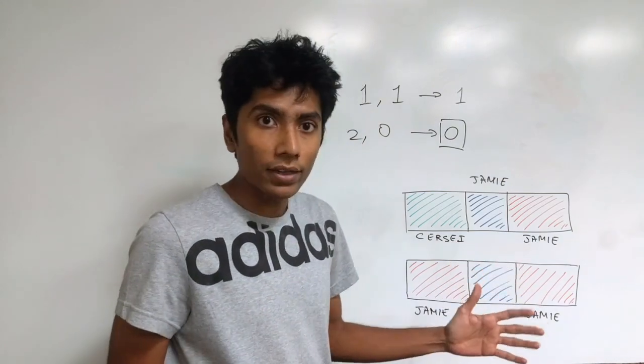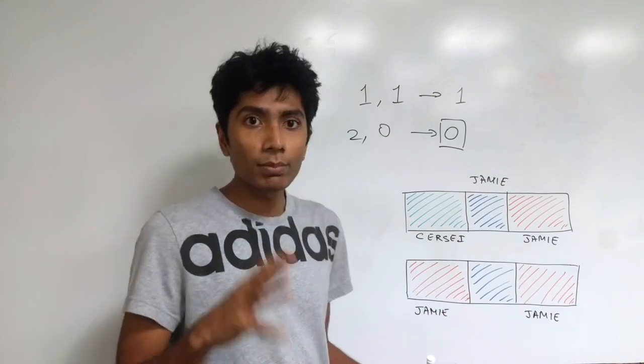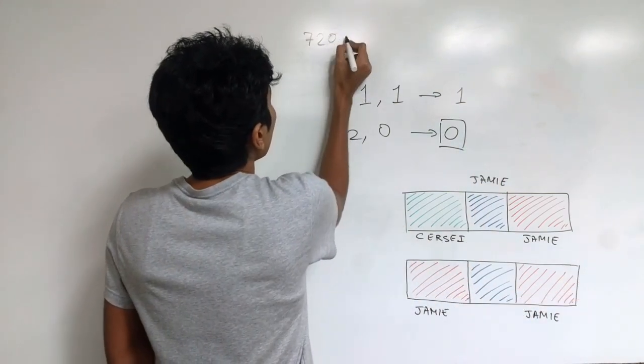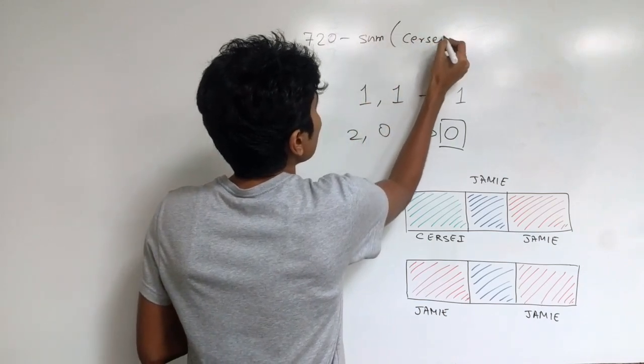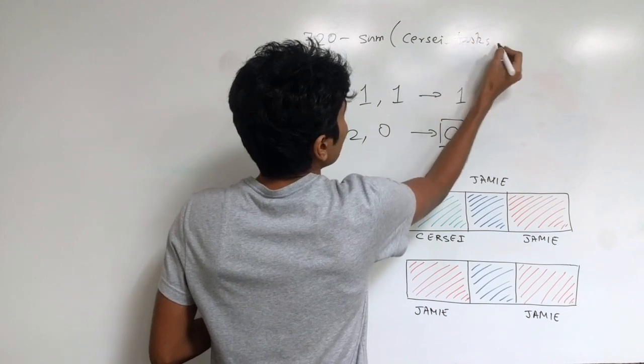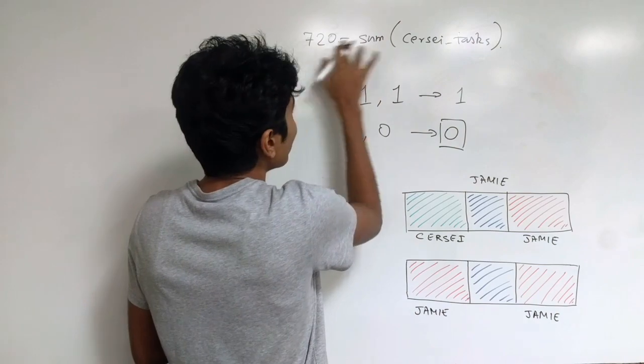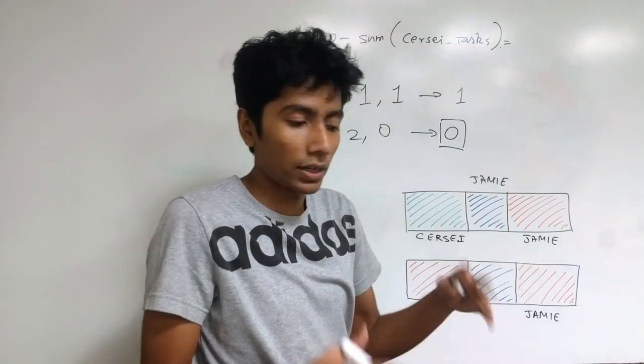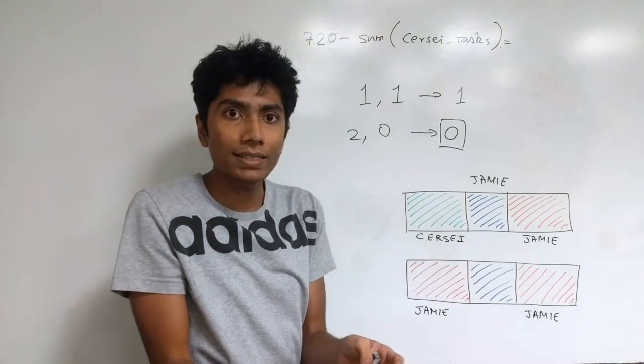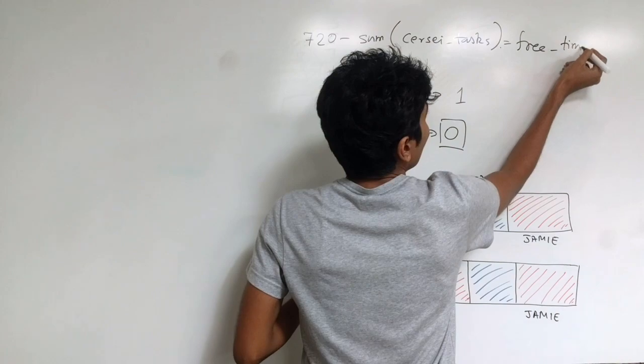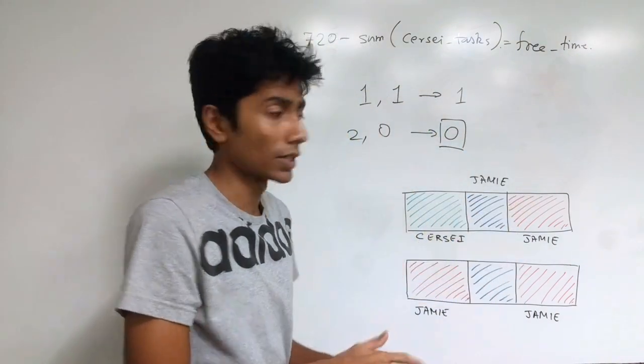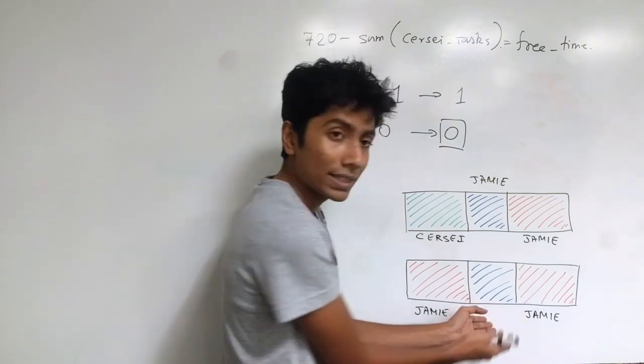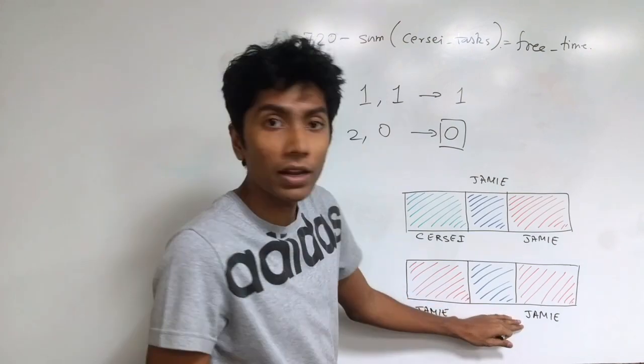And to do that, you need spare time. So Jamie has some spare time apart from the amount of time he takes care of the baby while Cersei is away working. The remaining 720 minus sum of Cersei tasks, let's say. So this is the amount of time that she's outside. The sum of that and 720 minus that is going to be the time that Jamie has free. Because this is the time that he has to work definitely taking care of the baby. And the remaining time, the remaining quota of 720 minus that is the amount of free time that Jamie has. This has to be filled up taking care of the baby this much time. Similarly for Cersei.